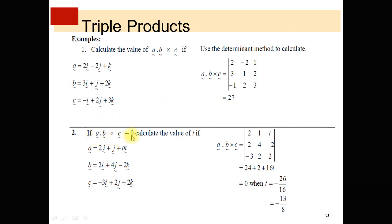Another example: if A dot (B cross C) equals 0, calculate the value of T, where T is a missing component in vector A. Vector A = 2i + j + Tk, B = 2i + 4j − 2k, and C = −3i + 2j + 2k. Setting up the scalar triple product determinant with first row (2, 1, T), second row (2, 4, −2), and third row (−3, 2, 2), and expanding, we obtain 24 + 2 + 16T = 0, since the scalar triple product equals 0.